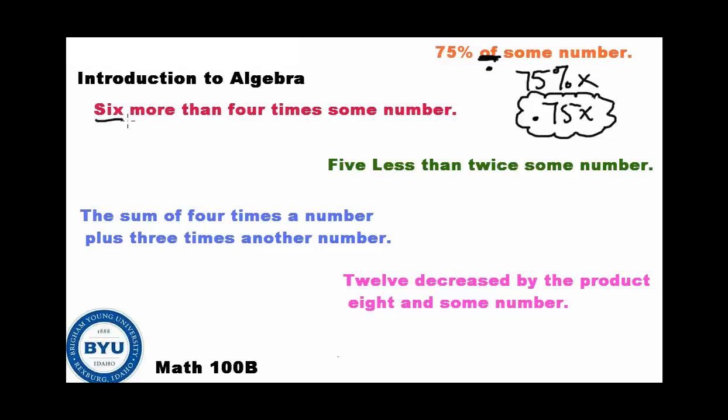Okay. Let's try six more. Well, more means plus, then four times, that's multiplication and some number. I'm going to go ahead and use x again. So six more means six plus and four times some number would be 4n. That's what you should have got for the second one.